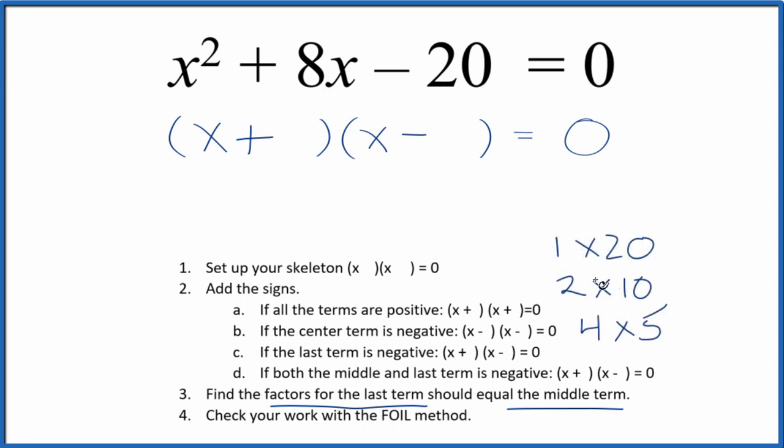So if I look at the factors here, the difference between 2 and 10, that's 8. So some combination of 2 and 10 in here, that should work. We want a positive 8. So let's put the 10 right here and then the 2 right here.